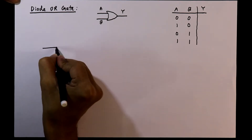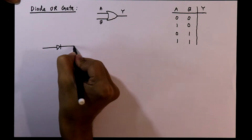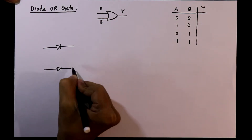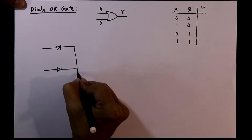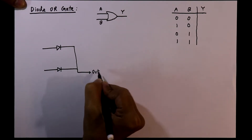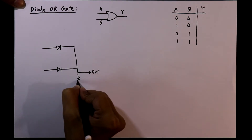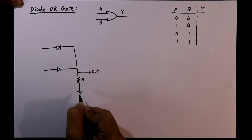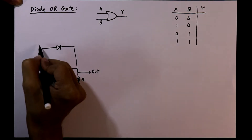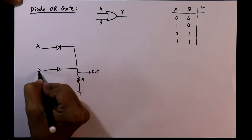As we are designing a two-input OR gate, we need two diodes. From here we'll take the output. At this point we will connect one pull-down resistor R, and here we will apply two inputs A and B.